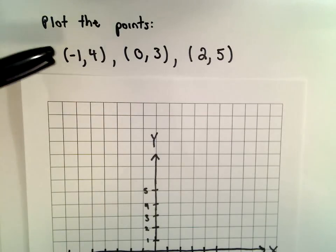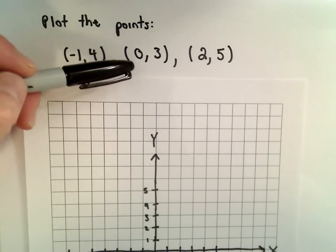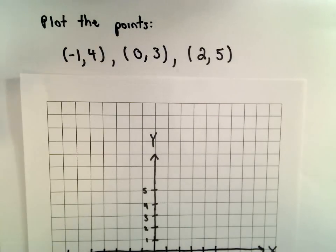In this example, we're going to plot the points (-1, 4), (0, 3), and (2, 5), so we'll have three different dots on the graph.